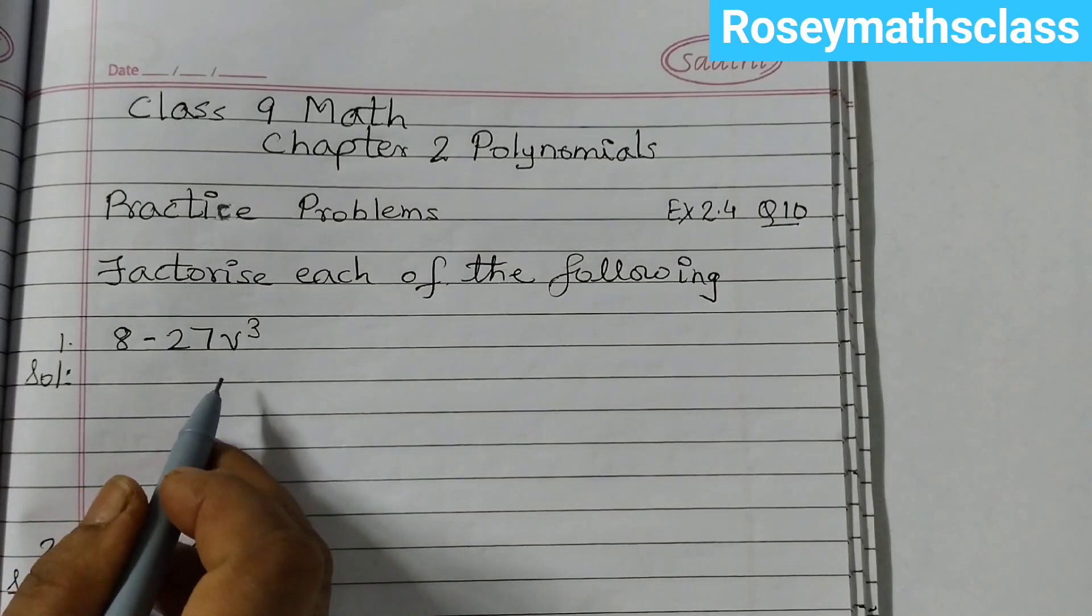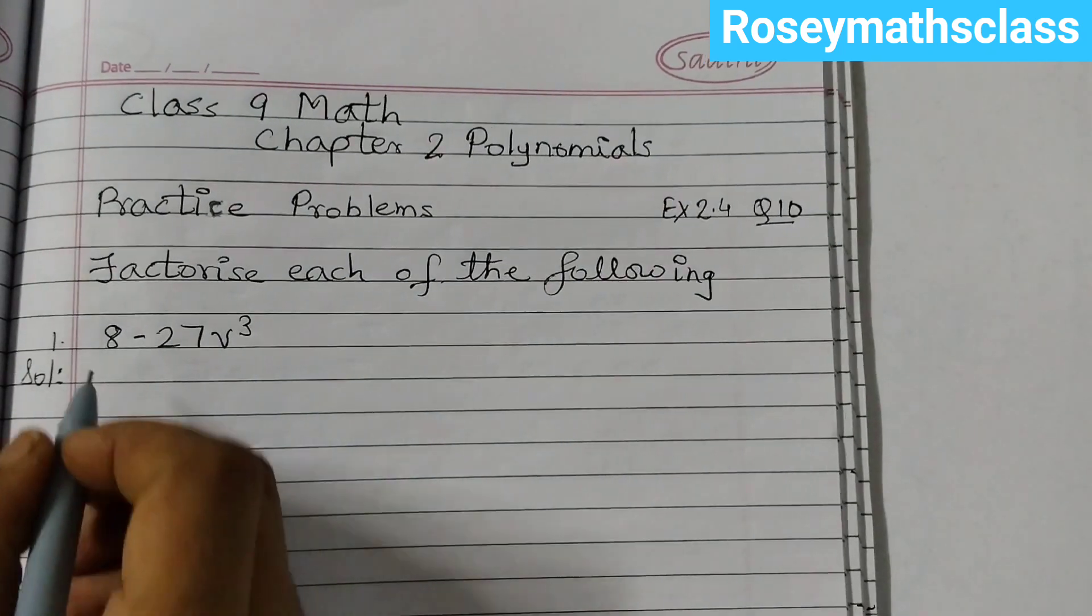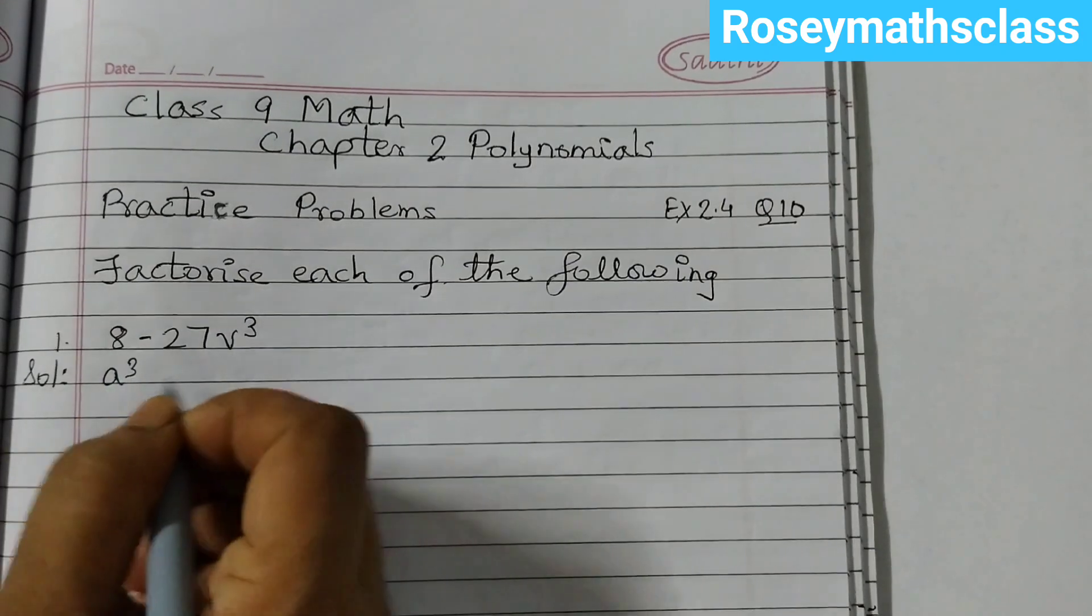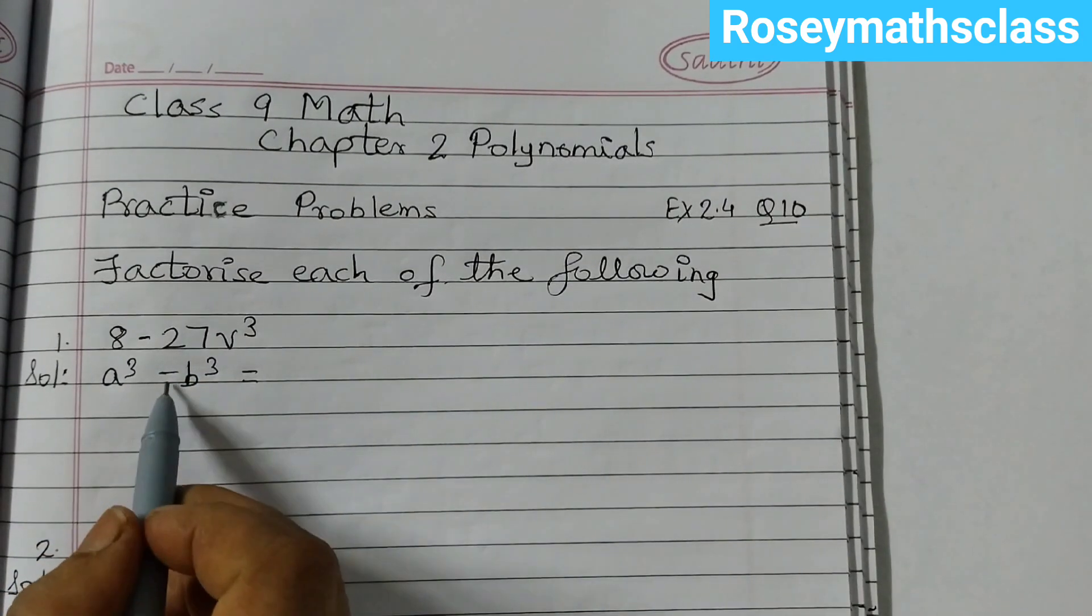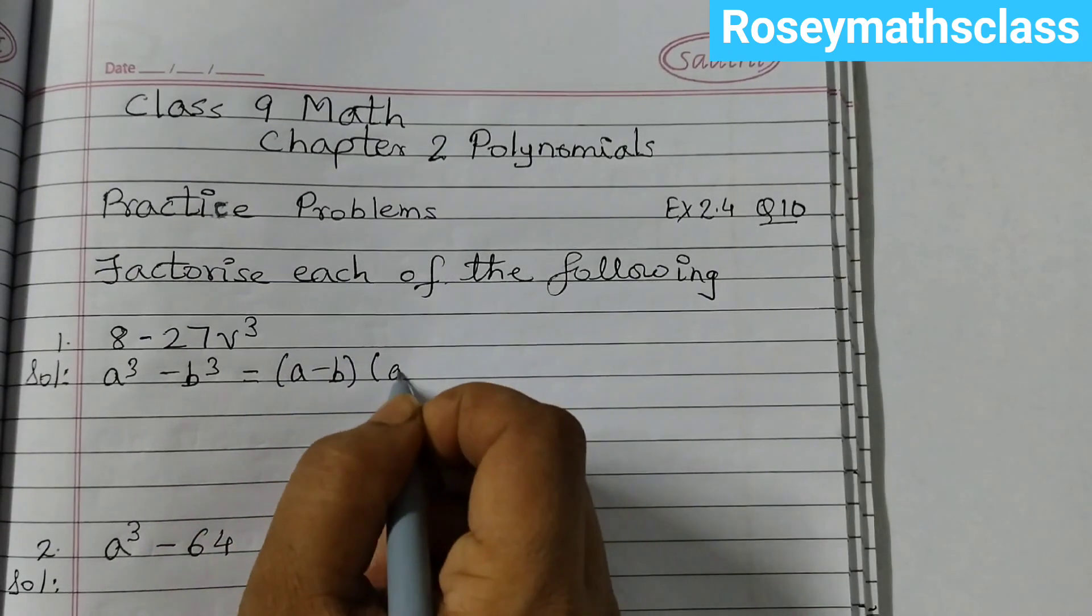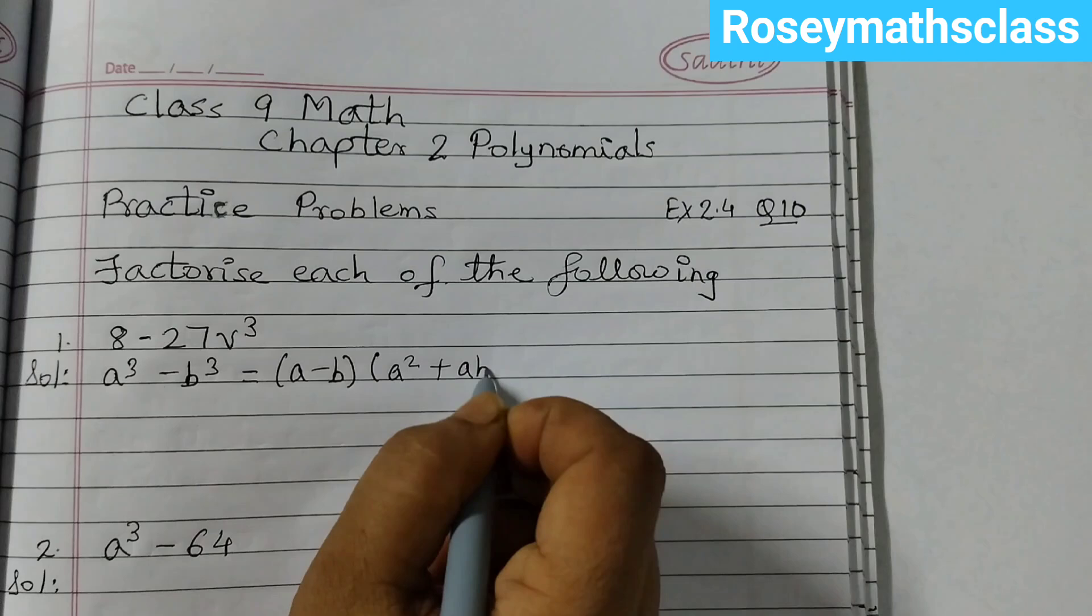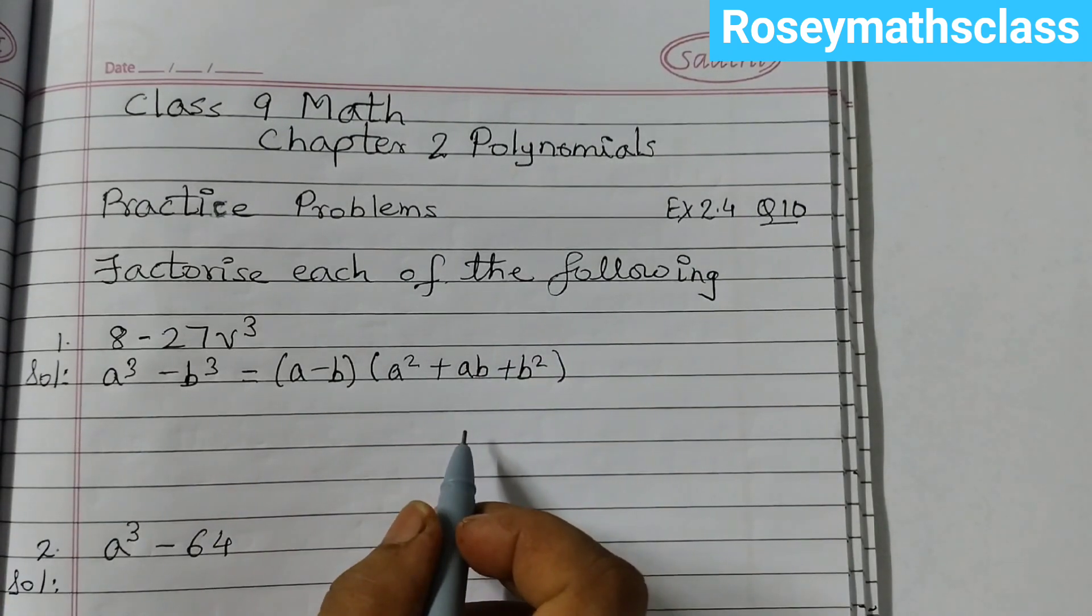First one is 8 minus 27V cubed and we need to factorize it. For this we are going to use the formula A cubed minus B cubed that equals A minus B and then A squared plus AB plus B squared. That is the formula that we are going to use.